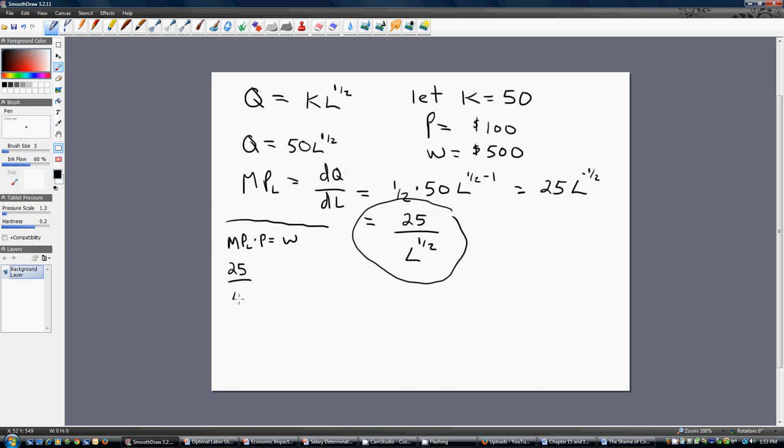Okay, so this is our optimality condition. So, 25 divided by the square root of labor is going to be multiplied by 100, the price. And that's going to equal the wage, or 500. So, simplifying this a little bit. 25 times 100 is 2,500. Multiplying through by the square root of L, or labor. Dividing through by 500.